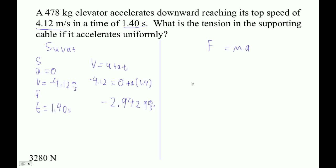Now we're going to solve an F equals MA problem. So you've got this elevator. There's an upward force. There's a downward force. And it's 478 kilograms.